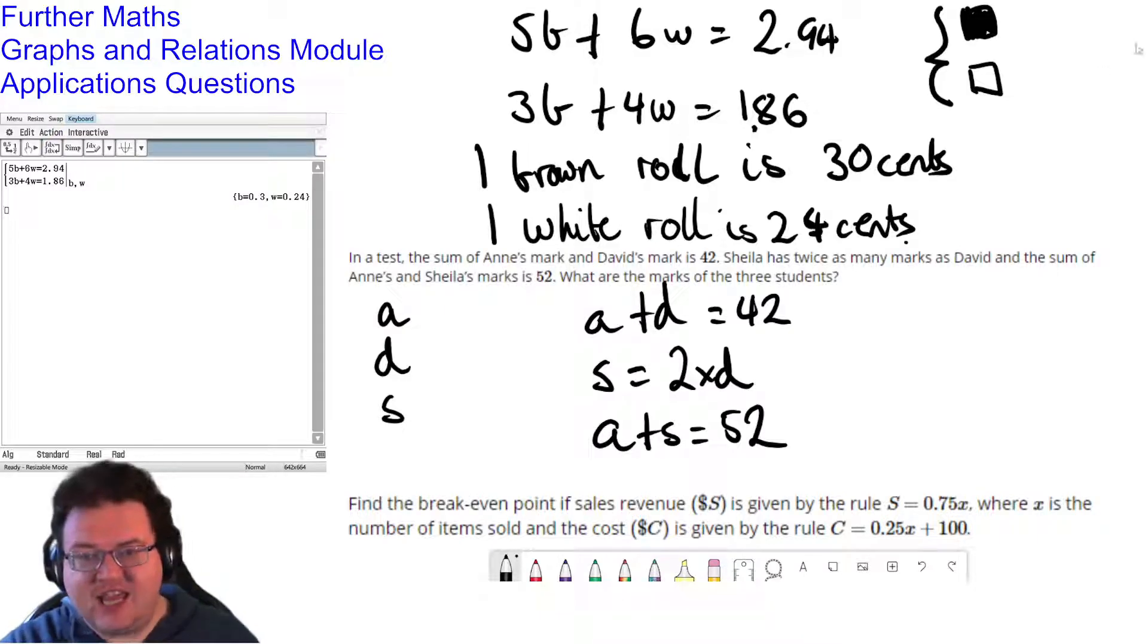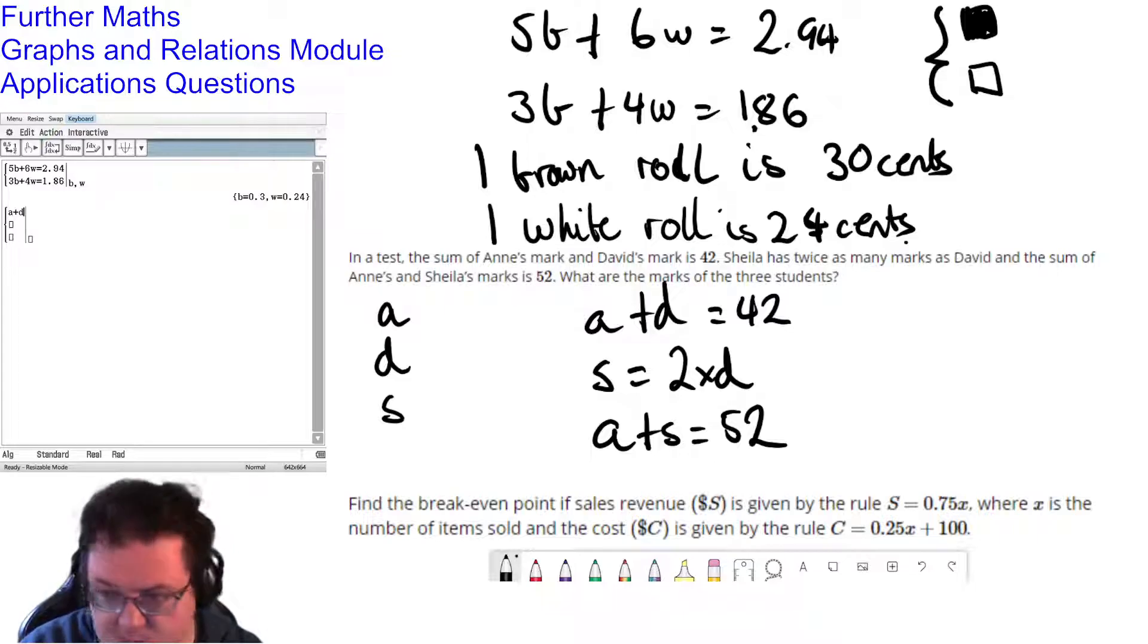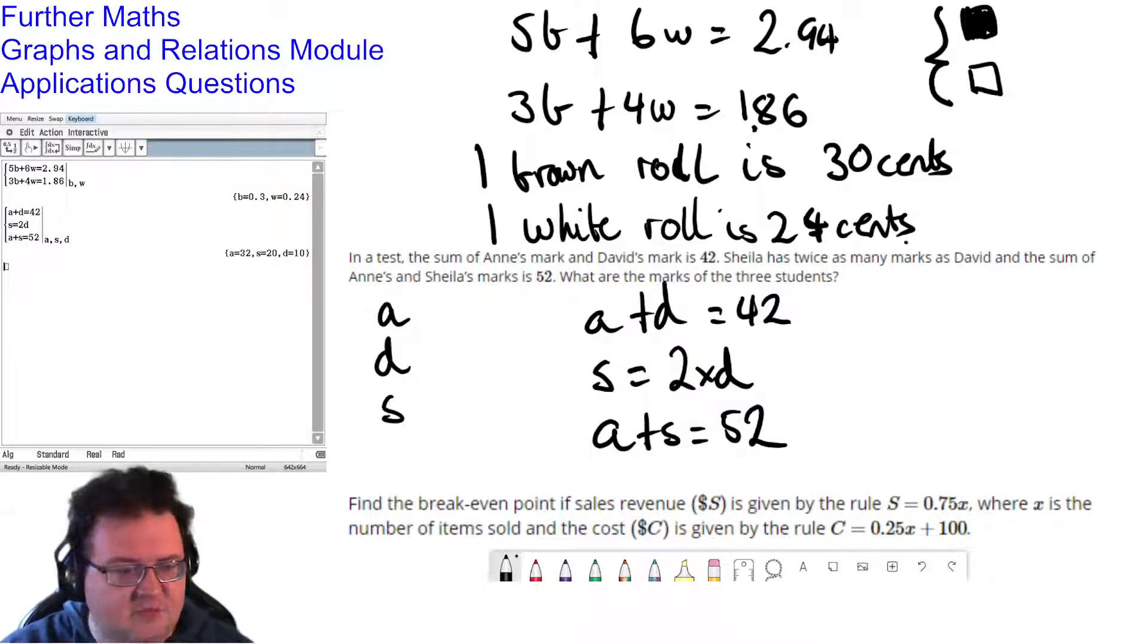So again, this is a CAS question. Now I can sit here and do it by hand. It's not going to accomplish much. Easiest thing to do is to just CAS it. Now, because this is a three-way equation, I'm going to need to hit the magic button twice. And it will create three rows in my system here. So I'm going to go a plus d equals 42. s equals 2d. a plus s equals 52. And then I'm going to go a, s, d. And then it spits out the marks.